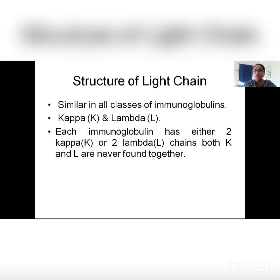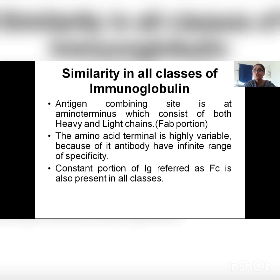Regarding the structure of the light chain: in all classes of immunoglobulins, does the structure of the light chain differ? No. Every immunoglobulin — except one formed as a dimer and another formed as a pentamer — has only two light chains. Two light chains present in each immunoglobulin will be either two kappa or two lambda arrangement. Light chains will not have kappa and lambda together.